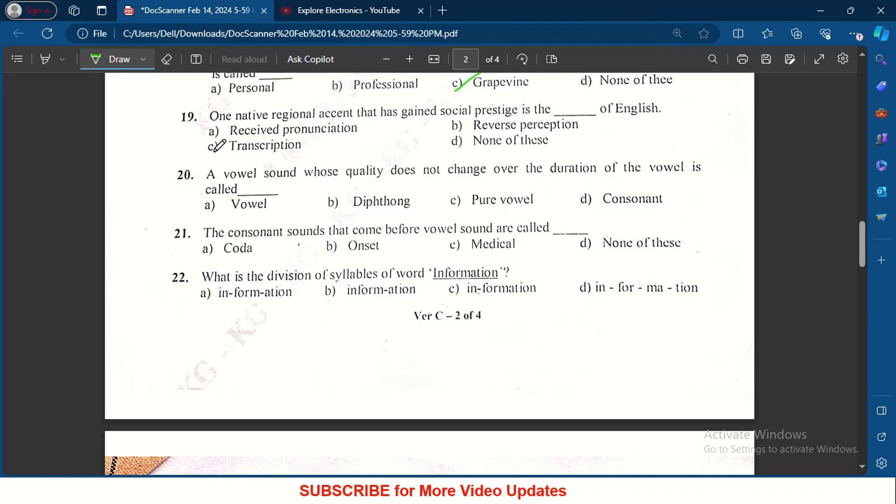One native regional accent that has gained social prestige is the dash of English - received pronunciation. A vowel sound whose quality does not change over the duration of vowel is called - it is pure vowel. The consonant sounds that come before the vowel is called onset.